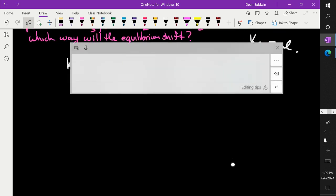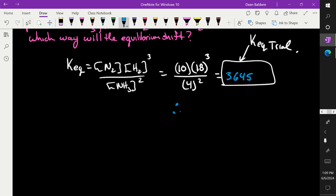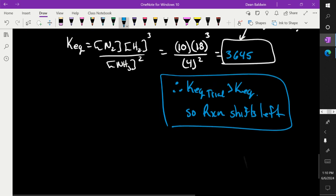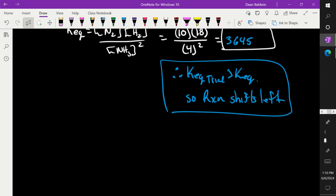Most of these questions, if you think about them, they make sense. That's a way to check your math. Therefore, KEQ trial is greater than KEQ, so reaction shifts left. And then we get into the ICE table stuff, everybody's favorite.